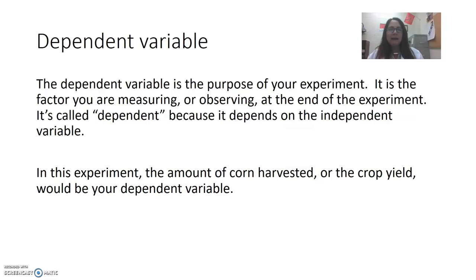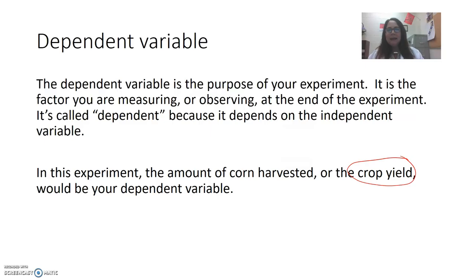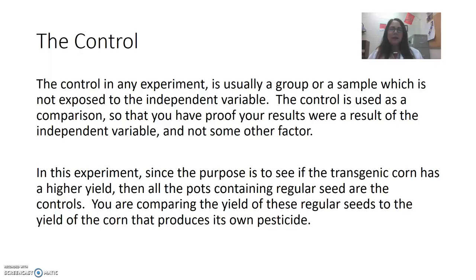The dependent variable is what you're measuring at the end of your experiment. It's called dependent because it depends on the independent variable. What we're measuring here is the crop yield. We could remove all the corn kernels from the ear of corn and weigh them — so our dependent variable would be measured in weight. We're expecting the weight or yield of the transgenic corn to be higher than the regular corn whenever insects are present, because those insects kill the regular corn.